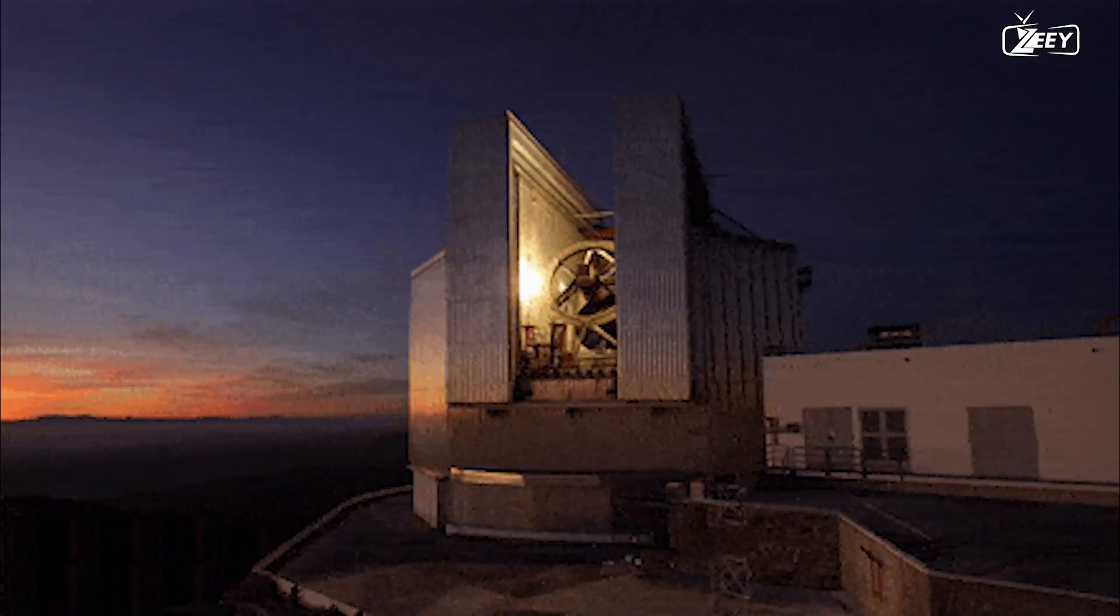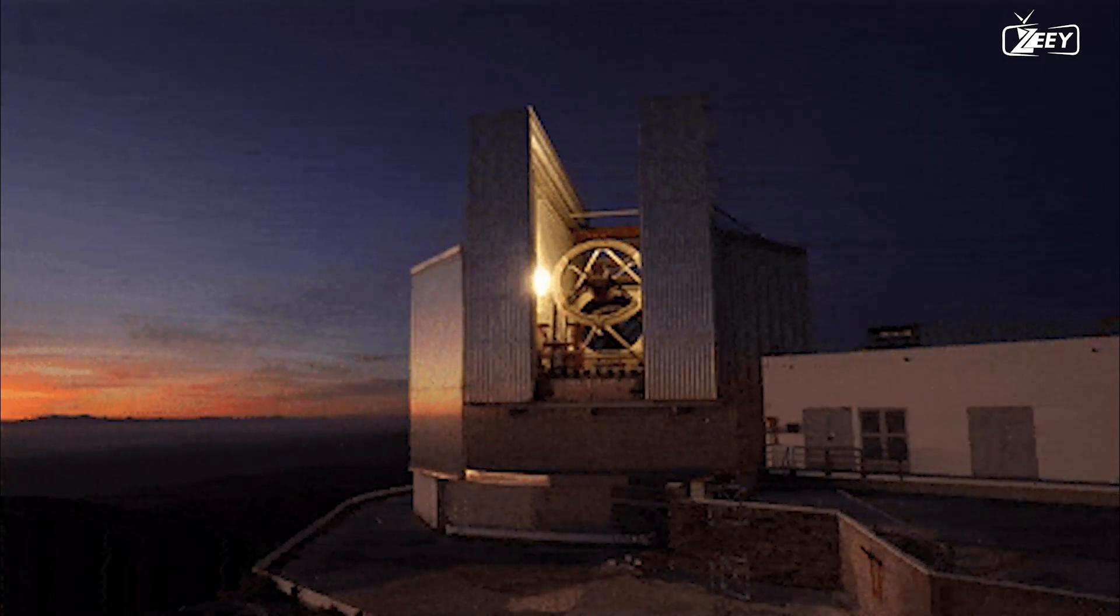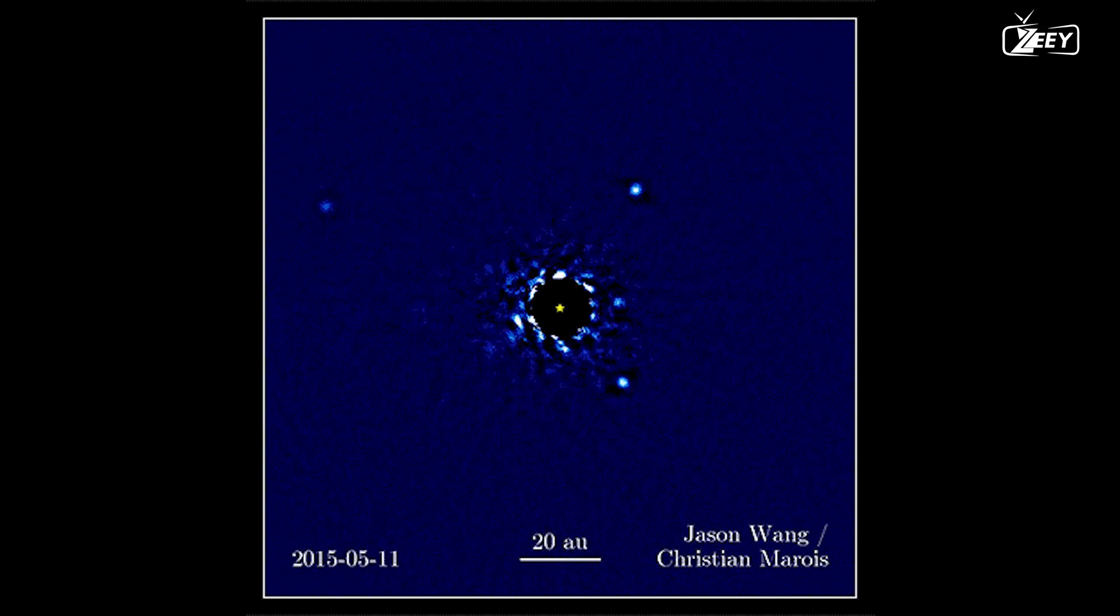the direct imaging technique uses big telescopes outfitted with adaptive optics, which improves their performance. The exoplanets with very elongated orbits that are warmer, younger, and more massive are those to which this method is most sensitive. In fact, the larger an orbit's angular size is in the sky, the simpler it is to see it and the more stretched it is.